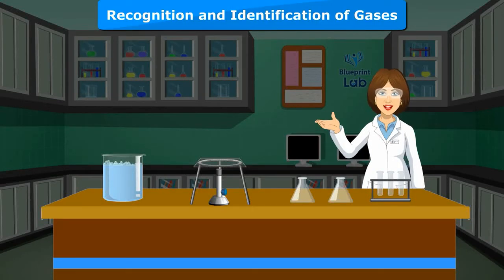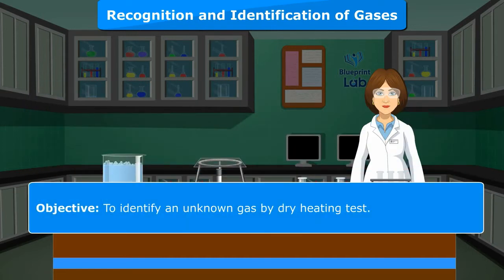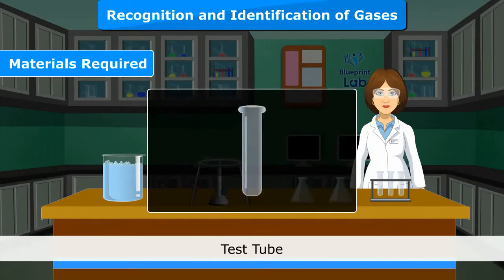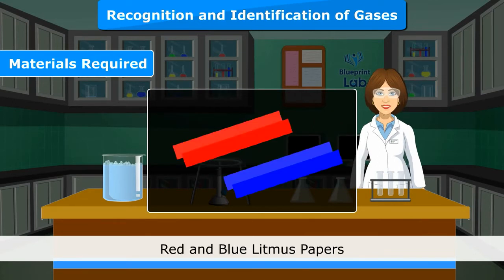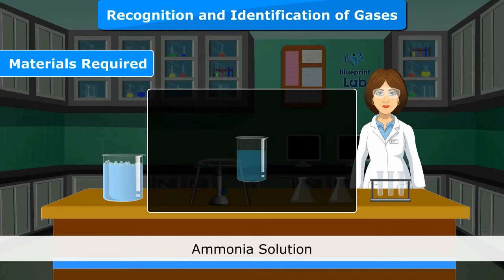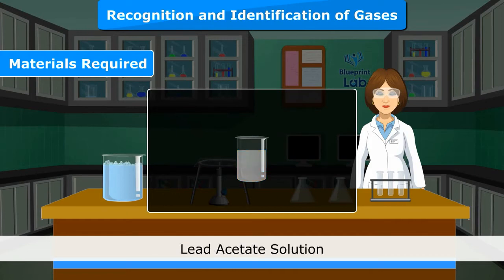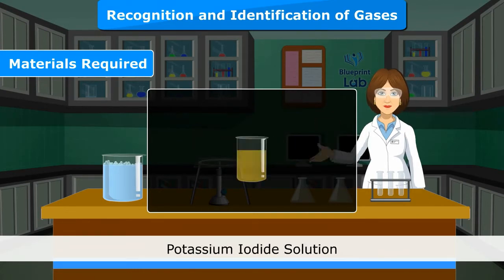Recognition and identification of gases. Experiment 1 Objective: To identify an unknown gas by dry heating test. Materials required: test tube, test tube holder, reagent, Bunsen burner, red and blue litmus papers, candle, matchbox, lime water, starch iodide paper, ammonia solution, AgNO₃ solution, filter paper strips, acidified potassium dichromate solution, lead acetate solution, concentrated HCl, Nessler's reagent, anhydrous copper sulfate, blue cobalt chloride paper, and potassium iodide solution.